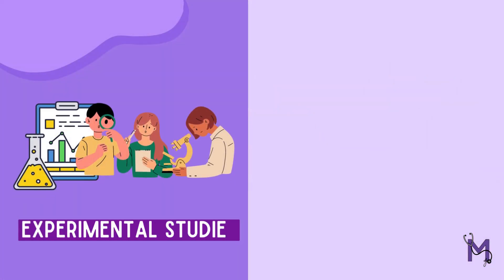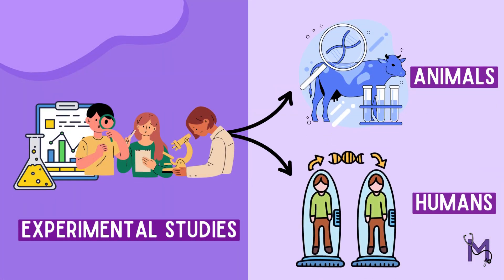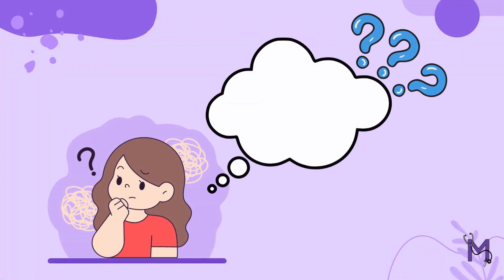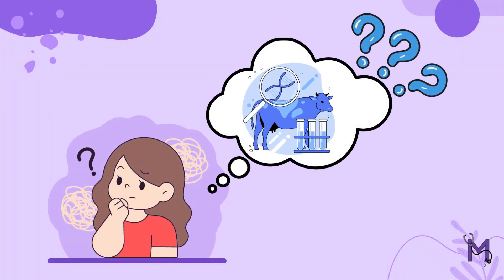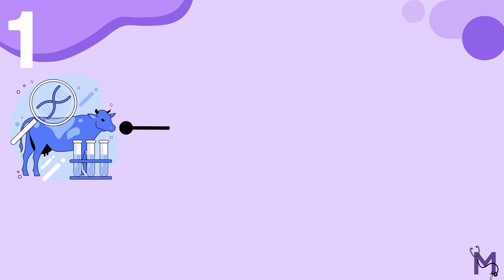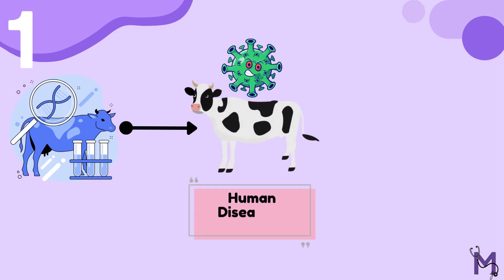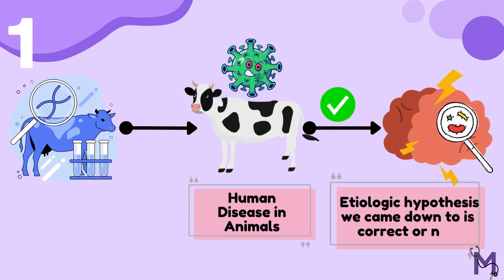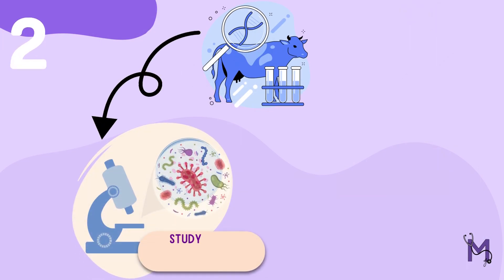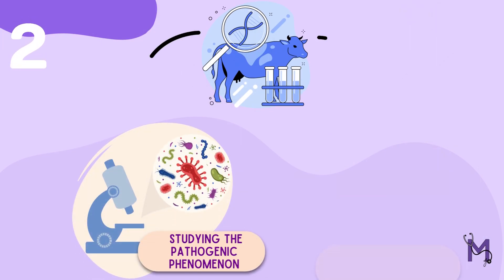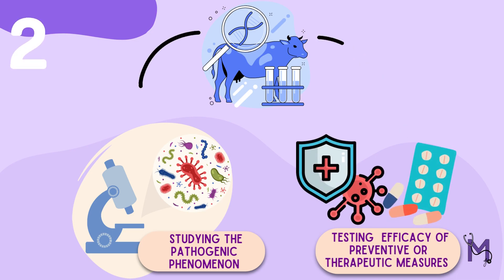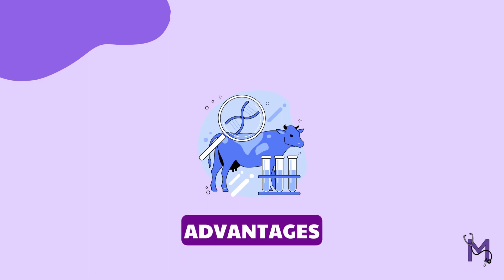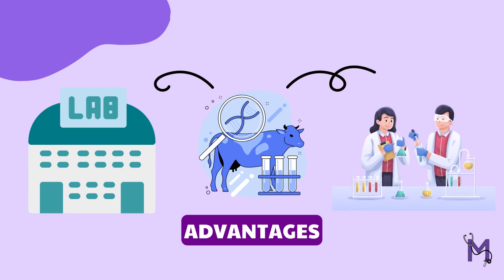These experimental studies can be conducted in animals as well as human beings. You might wonder why conduct animal studies in the first place. Well, animal studies will firstly experimentally reproduce human disease in animals to confirm if the etiologic hypothesis is correct or not. It also helps in studying the pathogenic phenomena as well as testing the efficacy of preventive or therapeutic measures undertaken to counter the diseases. One major advantage is that these animals can be bred in laboratories and manipulated easily by the investigator.